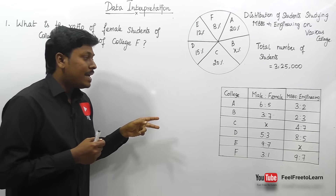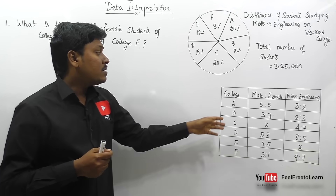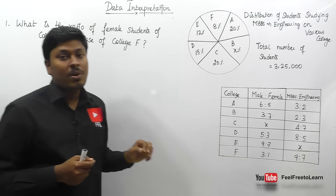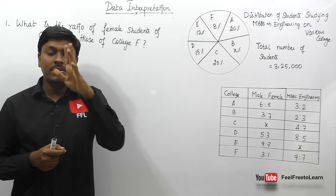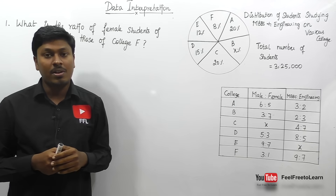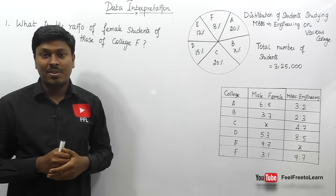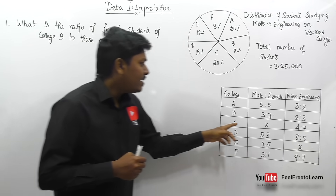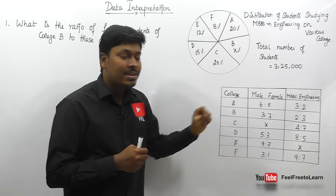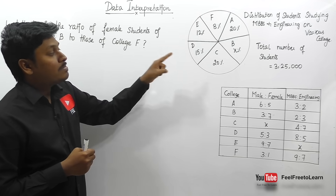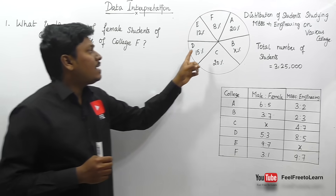The table chart gives the male-to-female ratio and the MBBS-to-engineering ratio for all colleges A to F. Some values are missing: college C's male-to-female ratio is not given, and college E's MBBS-to-engineering ratio is not given. In the pie chart, college B is x percentage.